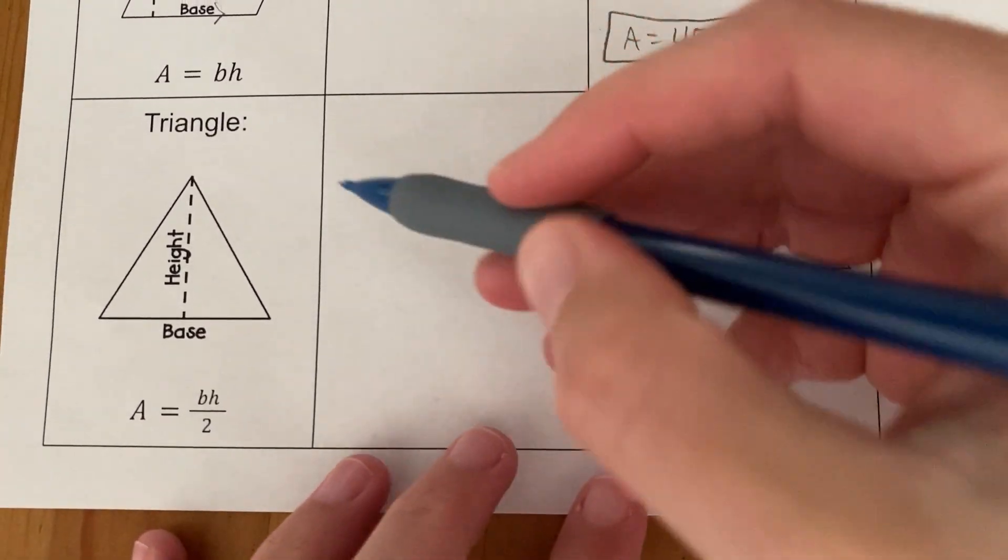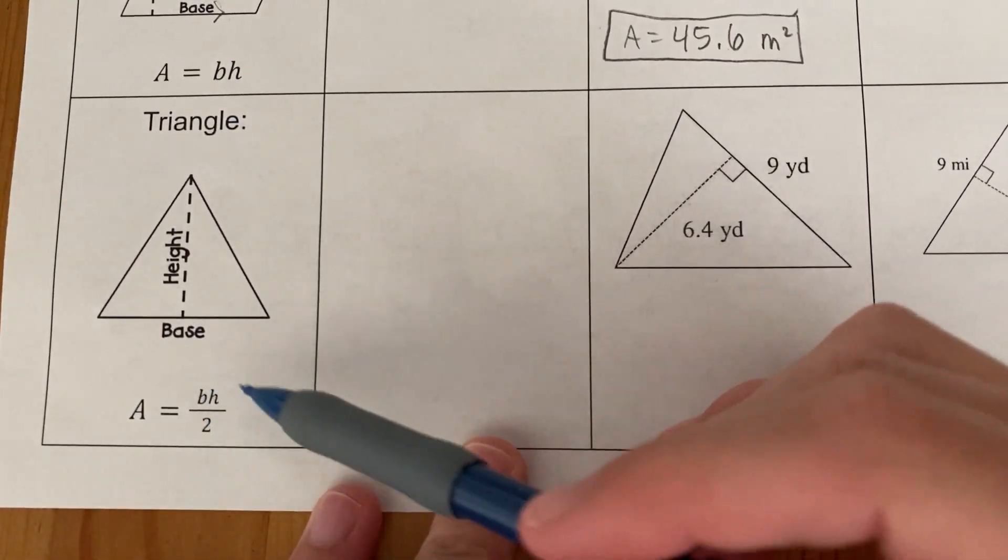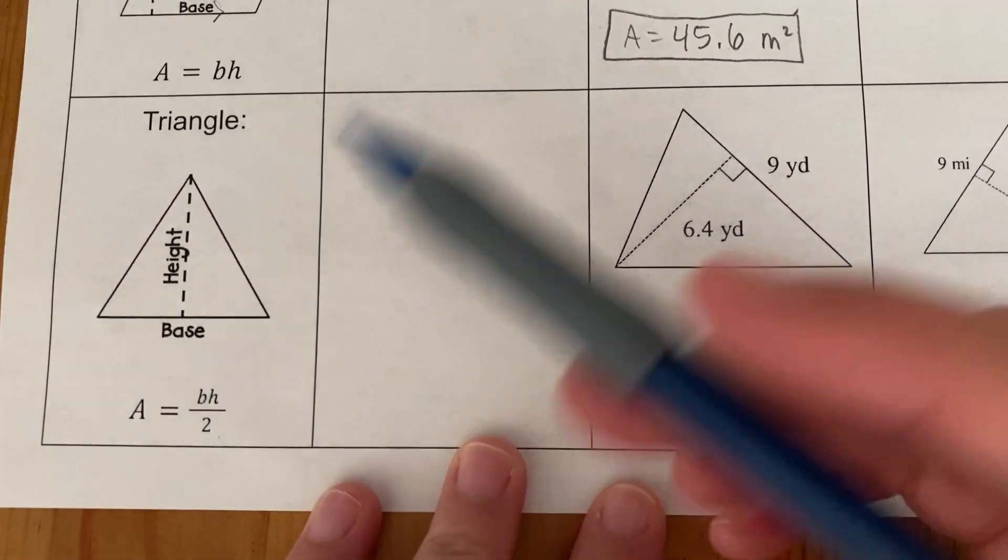Okay, so for the triangle, our area is base times height, same as a parallelogram, and kind of the same as a rectangle, except it's divided by 2.